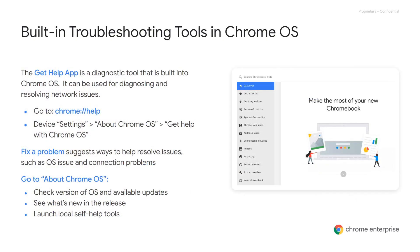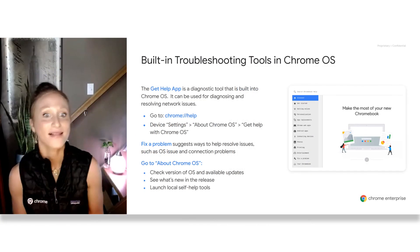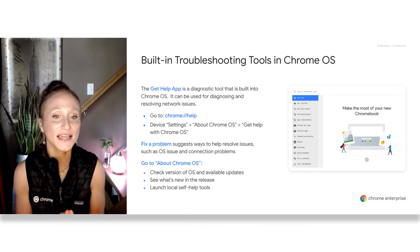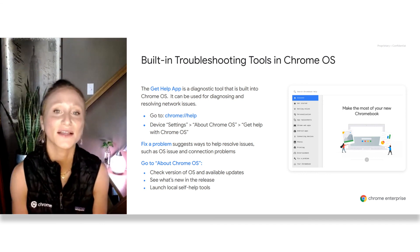If you're an IT administrator looking for self-service options for end users, there is hope. Users can access Chrome OS built-in tools in a couple of ways on the device. If they have access to the browser, they can type chrome://help to launch Chrome OS settings and click the 'Get help with Chrome OS' option. Alternatively, they can go straight to device settings and click into 'About Chrome OS' and then 'Get help with Chrome OS.' Both options launch the Get Help app, which provides local network troubleshooting steps and tests that end users can perform on their own before contacting support. Users can also click the 'Fix a problem' section to run a diagnostics report for connectivity issues. When users are first learning Chrome OS, the 'Get Started' section provides how-to articles and access to the latest release notes detailing new features.